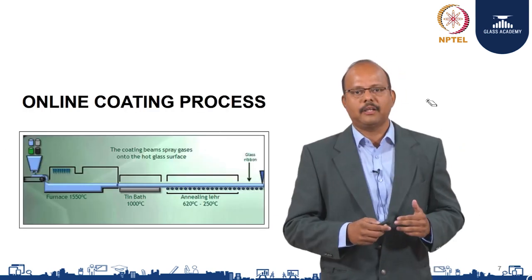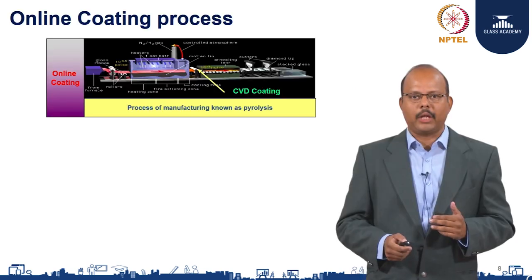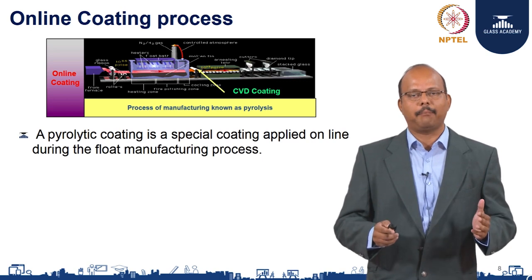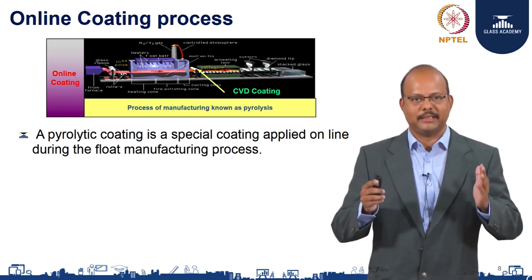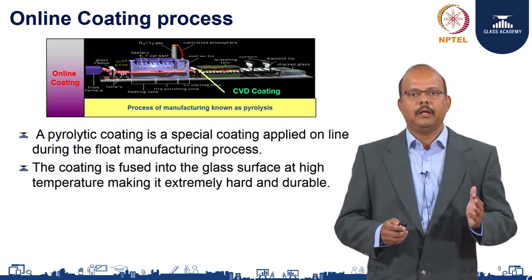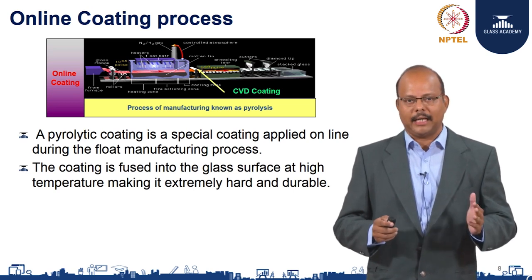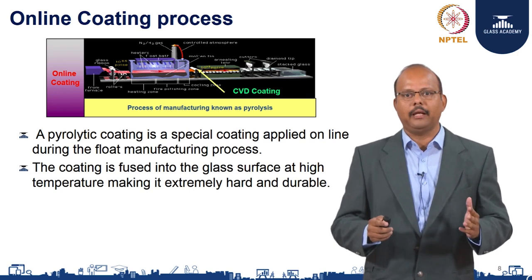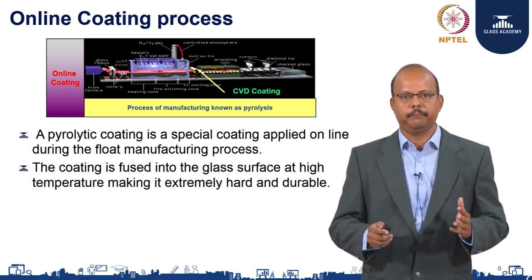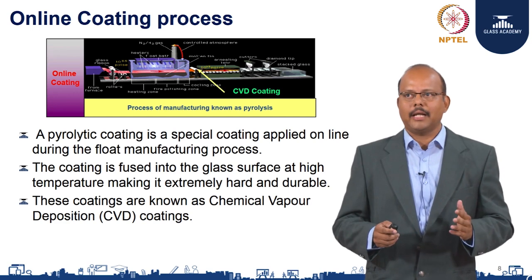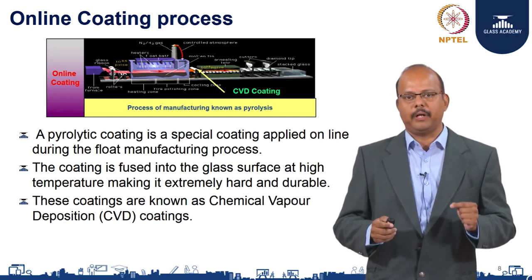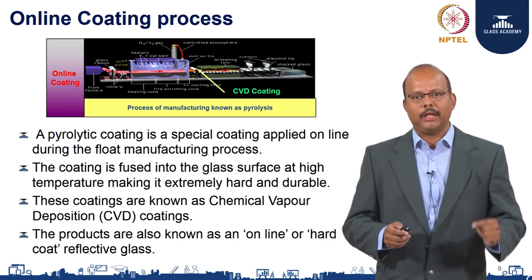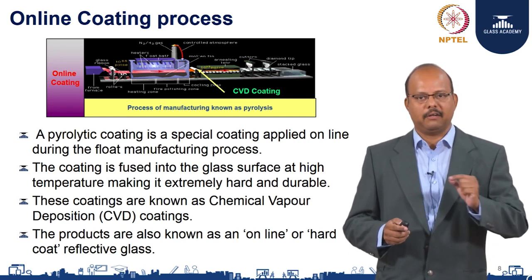First we will cover the online coating process. The online coating process is traditionally a pyrolytic coating process which is applied in the float glass manufacturing process itself. Here the coating is fused onto the glass at high temperatures, making the actual coating extremely hard and durable. These coatings are generally called CVD or chemical vapor deposition coatings. They are also known as online coatings or hard coating reflective glass.